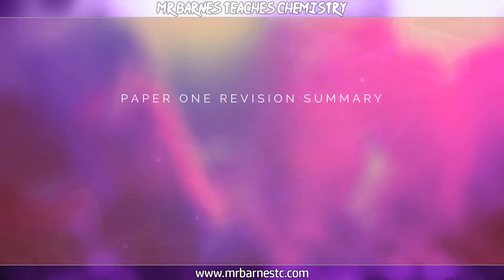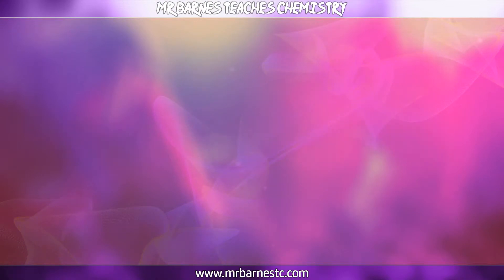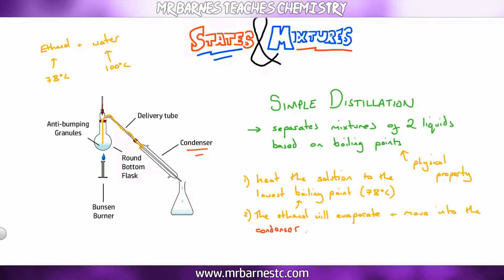If you have two liquids and want to separate them, that's distillation. Simple distillation separates mixtures of two liquids based on their boiling points. You heat the solution—for example, ethanol and water. Ethanol has a boiling point of 78 degrees, water 100 degrees C. Heat it to your lowest boiling point around 78 degrees C. The ethanol will evaporate, turn into a gas, move through the delivery tube into the condenser. In the condenser it will condense back into a liquid, surrounded by cold water, and be collected. You'll end up with ethanol in your flask on the right and water remaining in your round bottom flask on the left.